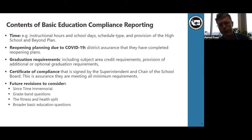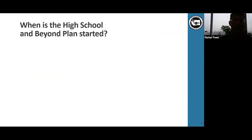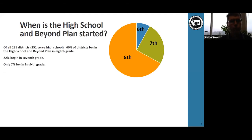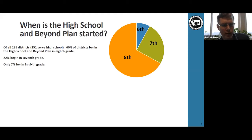We can also ensure implementation of and monitor progress toward other statutory obligations of school districts that come from the legislature or from rulemaking by state agencies. So when do school districts begin the high school and beyond plan? The answer is predominantly at eighth grade. 60%, so nearly two thirds of all districts in the state — and only 251 of those serve high school — begin the high school and beyond plan in eighth grade. The other districts responding to this question began in seventh grade at 22%, and only 7% begin in sixth grade.